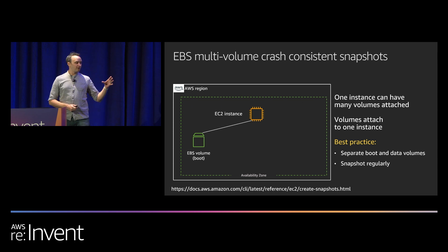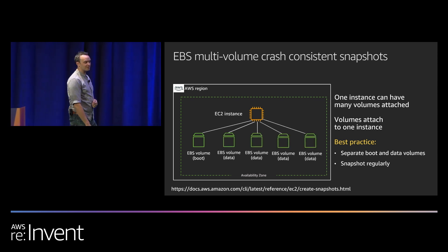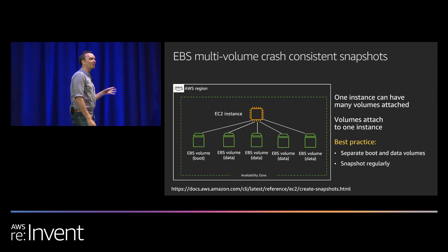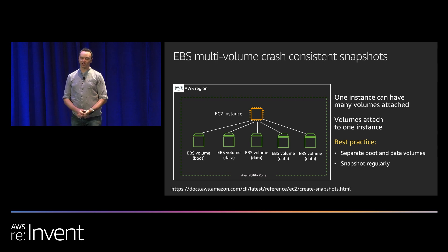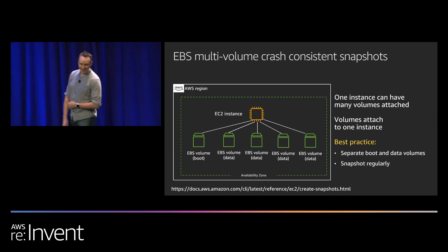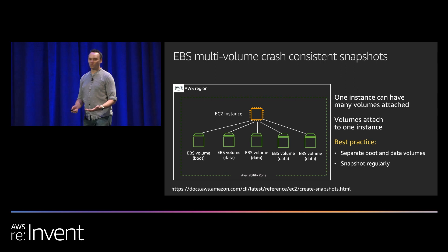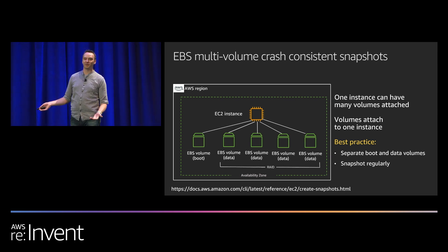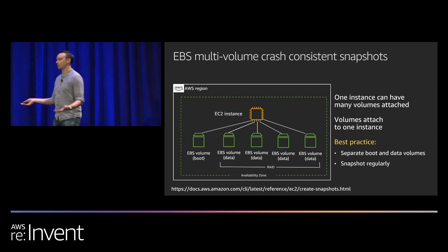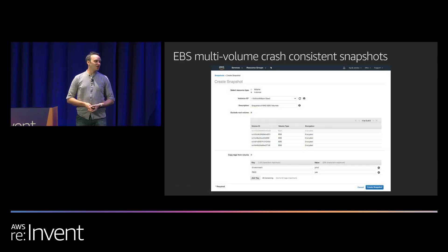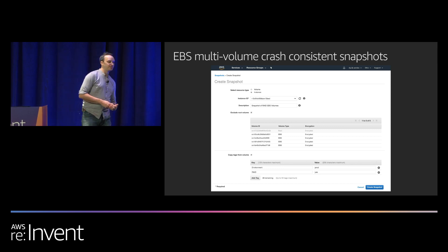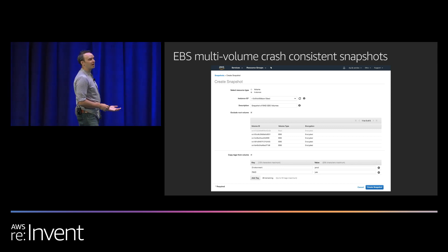An EBS volume can have one volume attached to one instance at a time, but one instance can have multiple volumes attached simultaneously. Best practice is to separate boot and data volumes, keeping boot clean and small while managing data independently. A common question is about RAID volumes — if you're doing RAID 0 across EBS volumes for more capacity or throughput, how do you snapshot them all at the same time? Earlier this year in May, we announced EBS multi-volume crash-consistent snapshots, supported through CLI, SDK, or API.